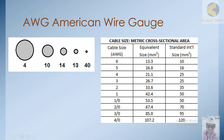If you get a higher AWG number, the cable size is smaller and it carries less current. For example, starting with AWG 6: AWG 6 is equivalent to 13.3 mm² and the internationally available standard size is 10 mm².